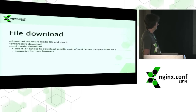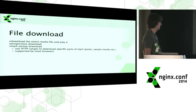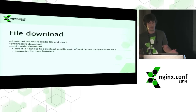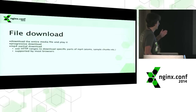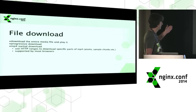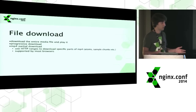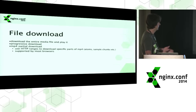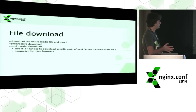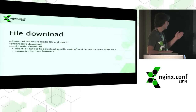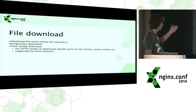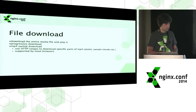File download is pretty simple. You can just download the file and play it at the client. But if the file is big, your client has to wait a long time, which is not acceptable in many cases. That's why progressive download was invented — it plays and downloads the file at the same time. But with some file formats, that's not a good choice since the data within the file resides in different parts. A common video format like MP4 is actually not very suitable for progressive download.